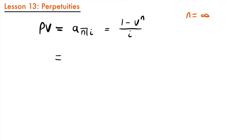The present value would be equal to a, and then n would be infinity, and we'd still have our interest rate i. But infinity is not a finite number — it's a value that is infinitely getting larger. So we can't just plug it into n. We're going to have to use a limit to figure out what this is equal to, because the limit allows us to see what happens as a value approaches infinity.